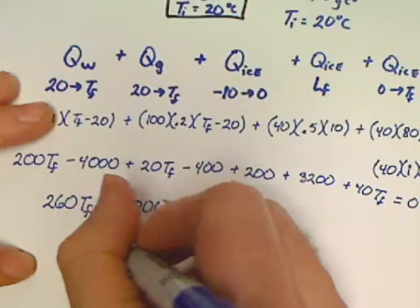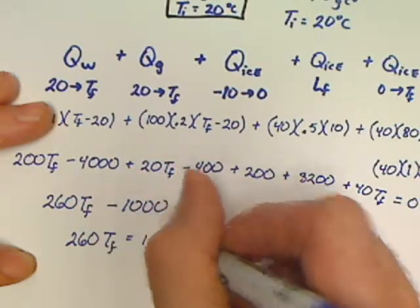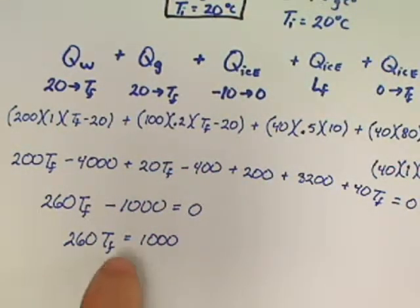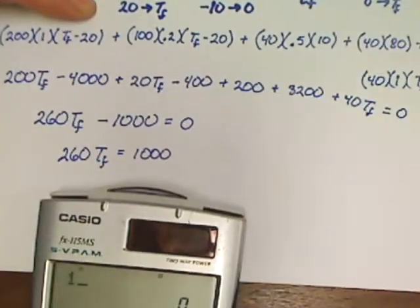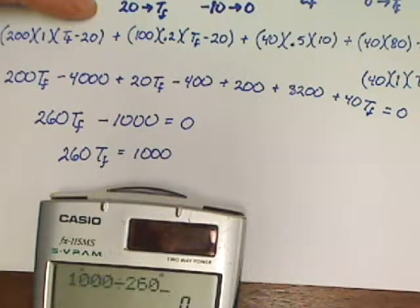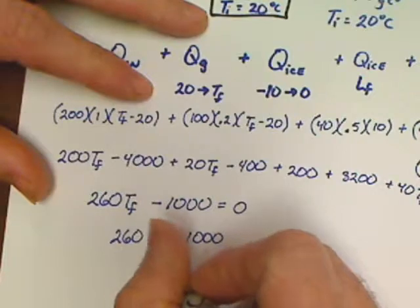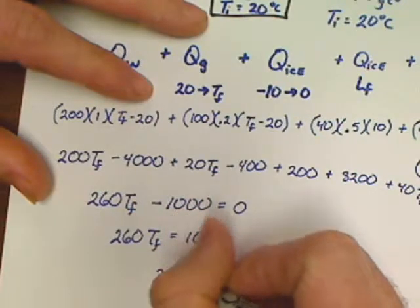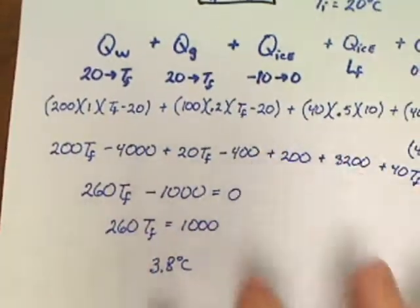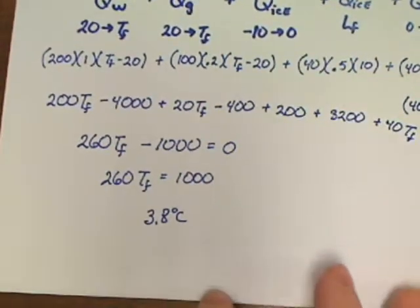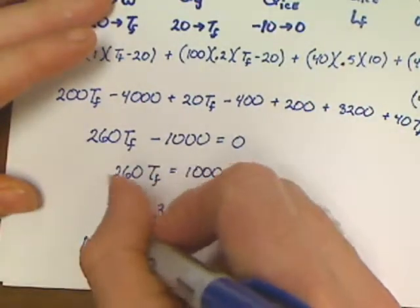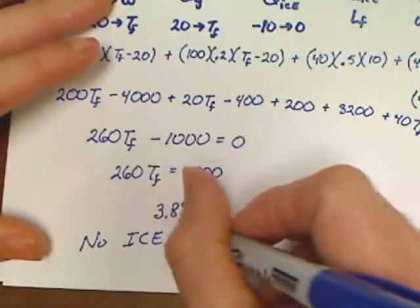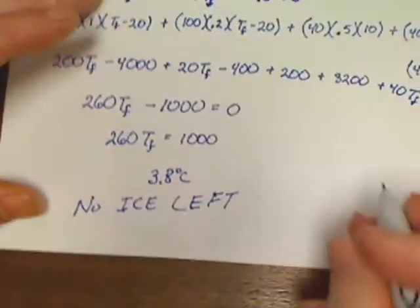So 260 TF equals 1,000. Temperature final is 1,000 divided by 260, which equals 3.8 degrees Celsius. This is a great result — TF is greater than zero. A lot of times a question might ask how much ice is left. You'd say no ice left, and the final temperature is 3.8 degrees.